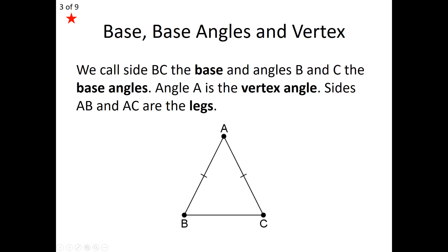Before we get into that phrase 'at least,' let's dive into dissecting our isosceles triangle. We cut it into some jargon we're going to be using. In the diagram below, the third side — which is not the pair of sides that are equal — we're going to call the base. The angles formed at that base are going to be called the base angles, so angle B and angle C are known as the base angles.